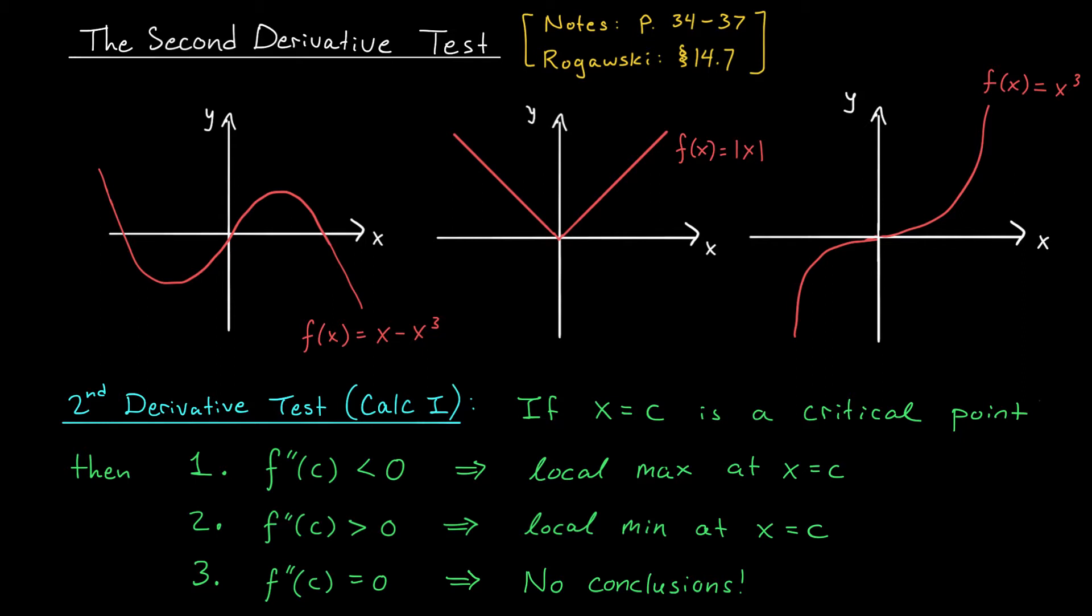Just like you knew back in Calc 1, local maxes and mins of multivariable functions must occur at critical points, though not every critical point is necessarily a local max or a local min. So once we've found our critical points, how can you tell?